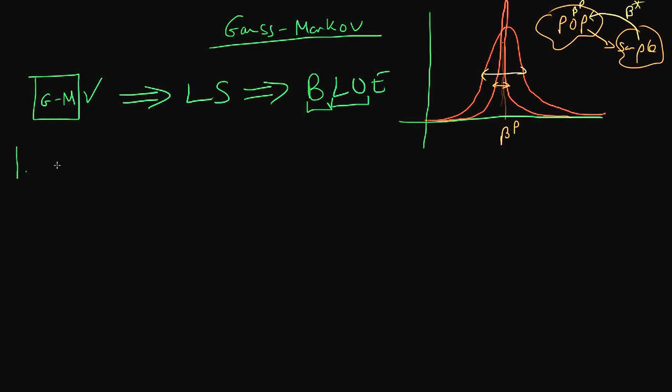The first Gauss-Markov assumption has to do with the population process. So assuming that there is some population process which connects wages with number of years of education and education doesn't exactly determine wages because there's some sort of error term here. This is an example of a model which is linear in parameters. So that means that it's linear in alpha and beta. This is the first Gauss-Markov assumption which says that our population process has to be linear in parameters.